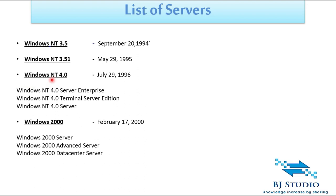When they entered into Windows NT 4.0, they started adding flavors to the servers. They added three flavors: the first is Server Enterprise Edition, the second is Terminal Server Edition, and the last is Windows NT 4.0 Server. Why they added flavors and what is the importance of these editions — you will come to know in the later part of the videos.